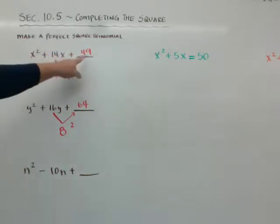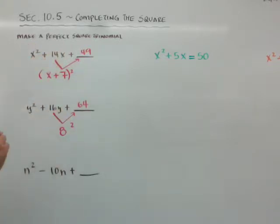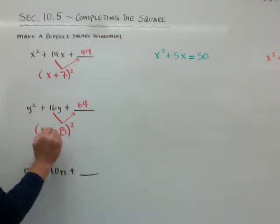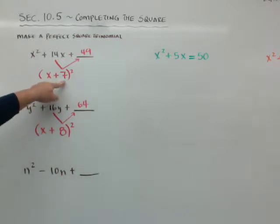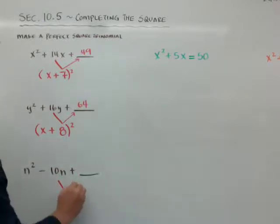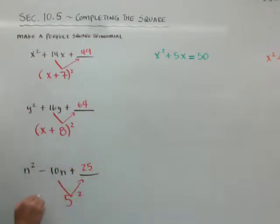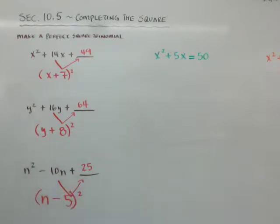The part of the homework that asks what number goes in to make a perfect square trinomial — you just need to put 49 and 64. I'm showing you this so that when we start completing the square, you can see how it becomes x plus 8 quantity squared. You can even do it with a negative B: when I half it, it becomes 5, I square it to get 25, and it becomes n minus 5 quantity squared. So that's how you fill in a perfect square trinomial — half it and square it.